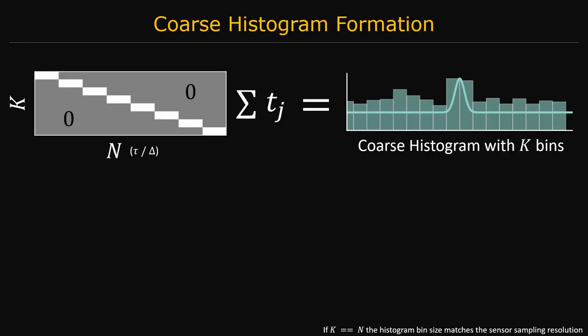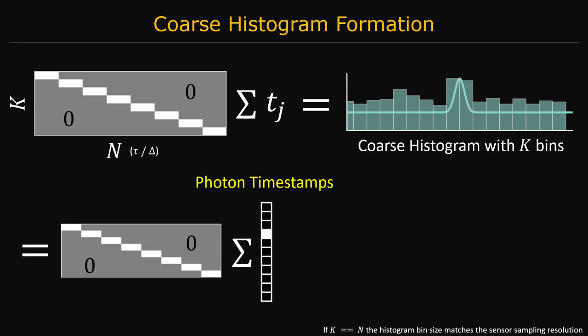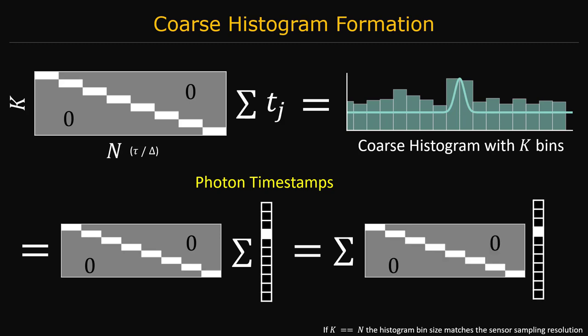Under this representation, a coarse histogram is built by multiplying the full-resolution histogram with a downsampling matrix. This is simply a matrix vector multiplication where the vector is the sum of all the one-hot encoded timestamps. In practice, to avoid storing the full-resolution histogram, the downsampling is applied on the fly to each timestamp vector individually.